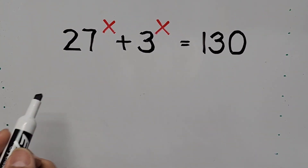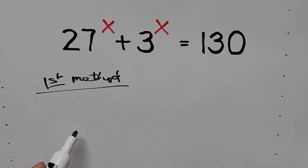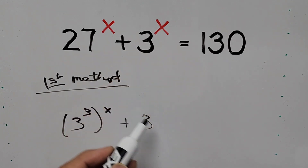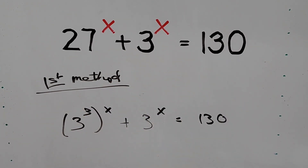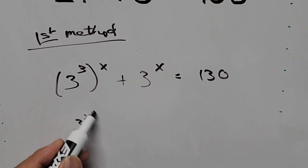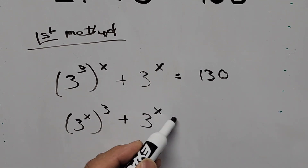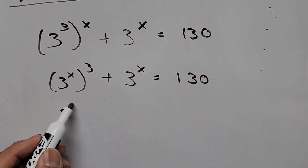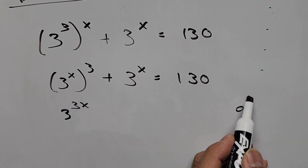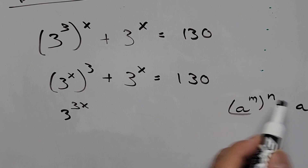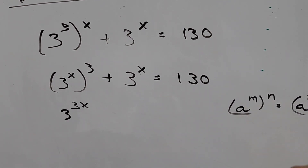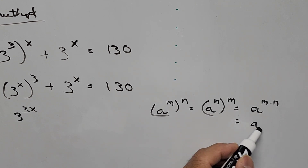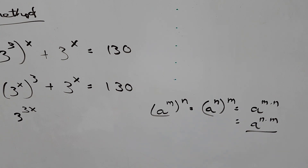Here is the first method. 27 can be written the same way as 3 cubed to the power of x, plus 3 to the power of x equals 130. The first term can be written as 3 to the power of x cubed, which simplifies to 3 raised to the power of 3x. This comes from the formula: a raised to m raised to n equals a raised to m times n — we end up multiplying the exponents.